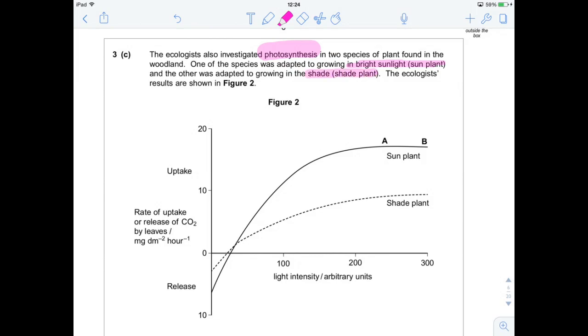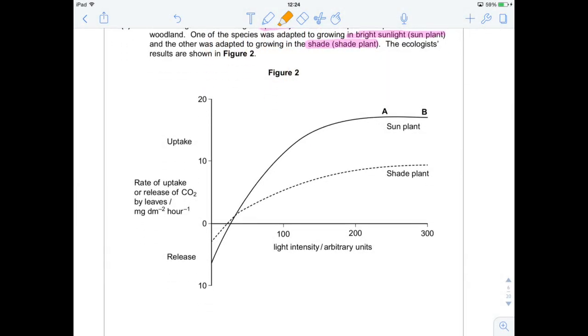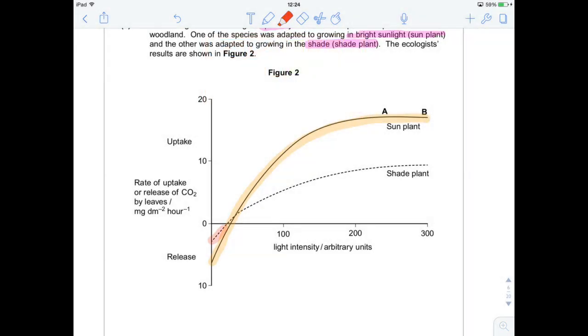The ecologists' results are shown in figure two. So the sun plant, this guy here, showing this nice pattern here with a plateau between A and B. And the shade plant showing a much shallower gradient with no real plateau here. But if we look at what's actually being measured here, on the x-axis, we've got an increase in light intensity. And then what's being measured is always on the y-axis. That's the rate of uptake or release of carbon dioxide by the leaves.